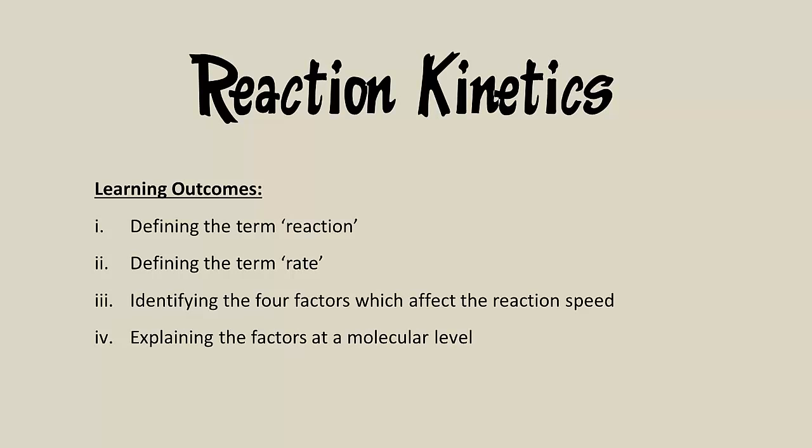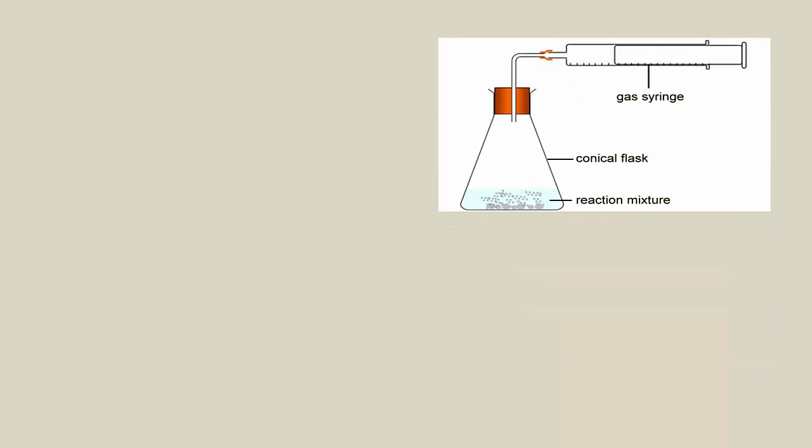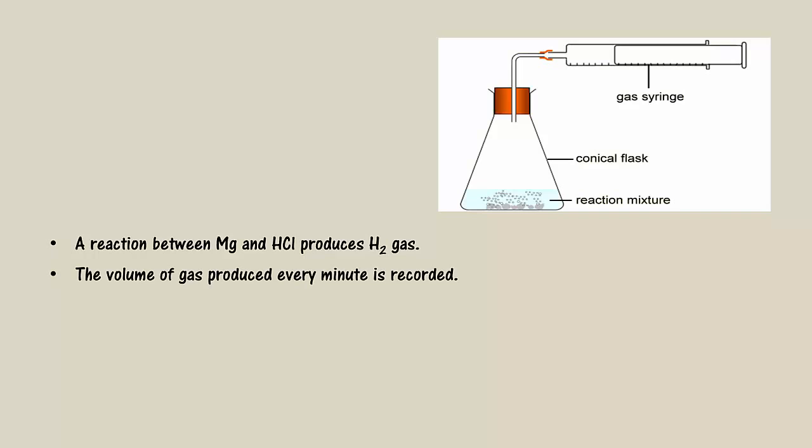The first thing we will look at is how to measure the reaction rate. You first need a reaction that has an observable result which can be measured. This is easier if the product is a gas, and the volume of the gas can be measured. A simple way to do this is to trap the gas in a measuring device like a syringe or an upside-down measuring cylinder filled with water. A common choice of reaction is using an acid with a metal like magnesium, which produces hydrogen gas, or a carbonate compound like sodium carbonate that makes carbon dioxide gas. As the reaction proceeds, the gas is trapped and the volume of gas recorded each minute can be written down.